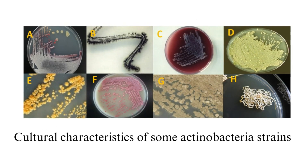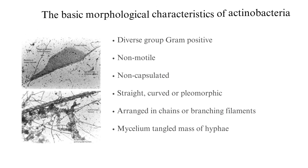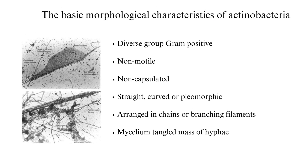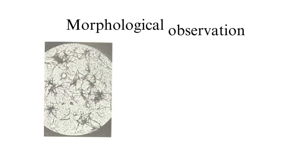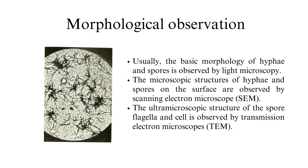The basic morphological characteristics of actinobacteria: they are a diverse group, gram-positive, non-motile, non-capsulate, straight, curved, or pleomorphic, arranged in chains or branching filaments, and mycelium — a tangled mass of hyphae.